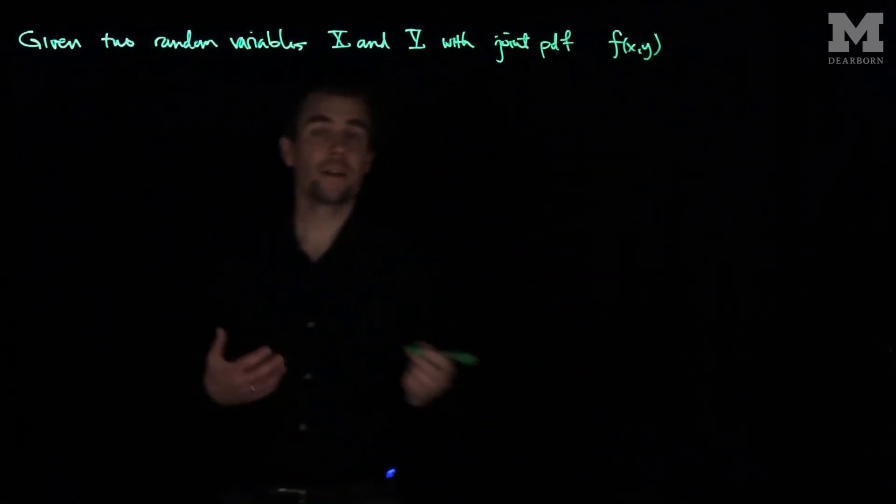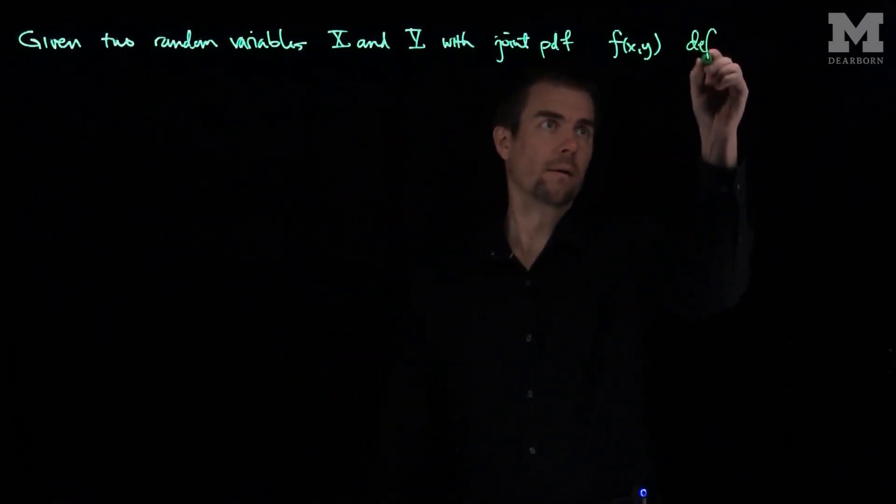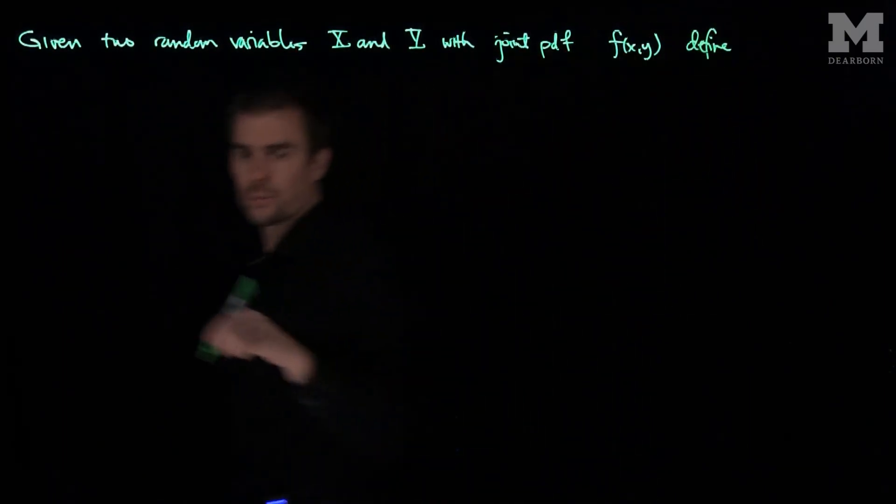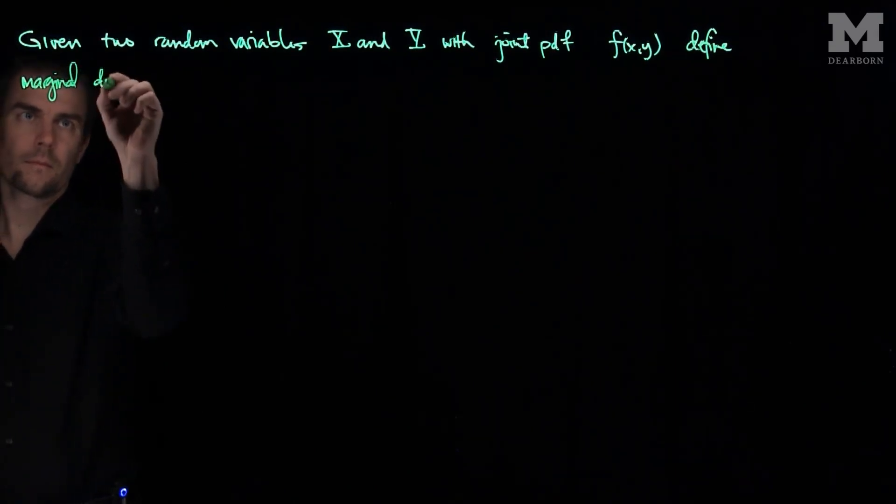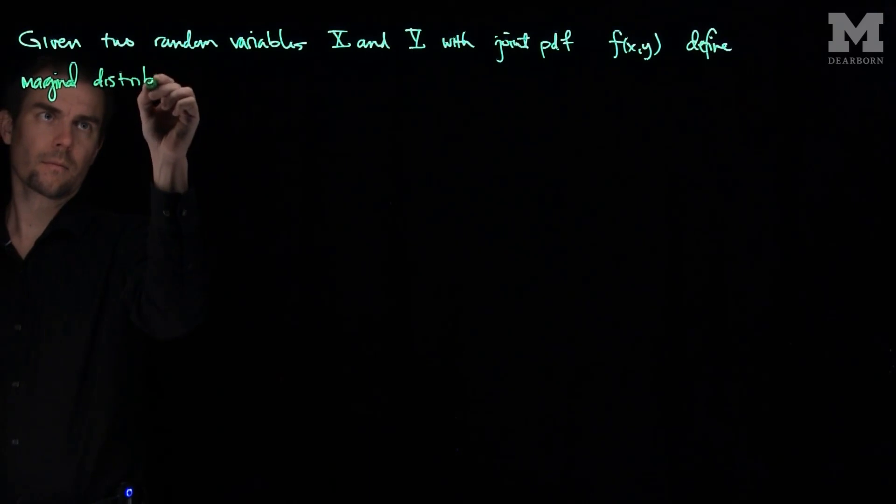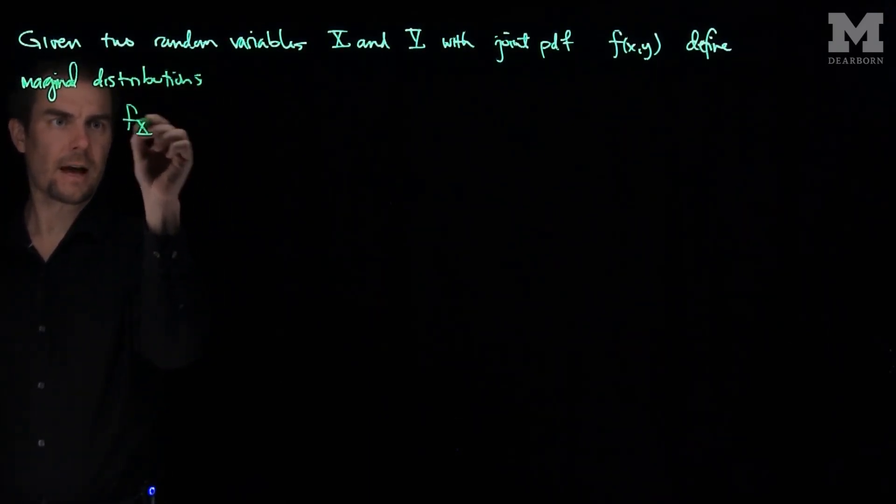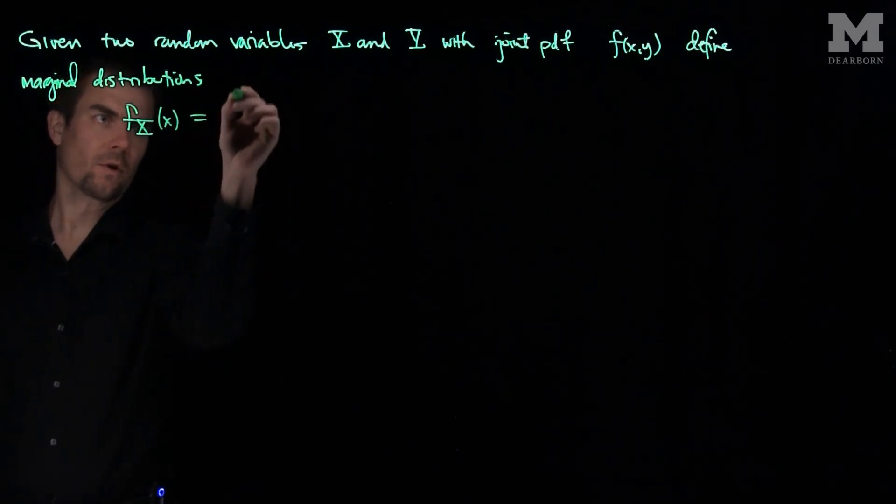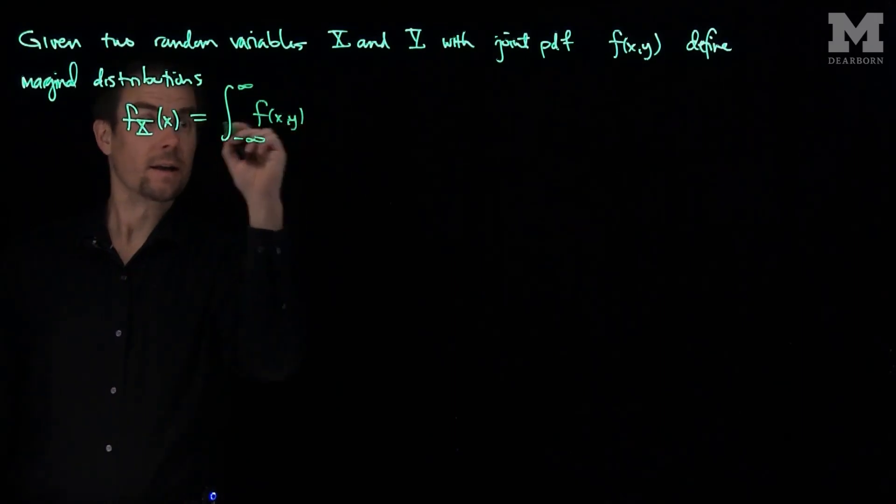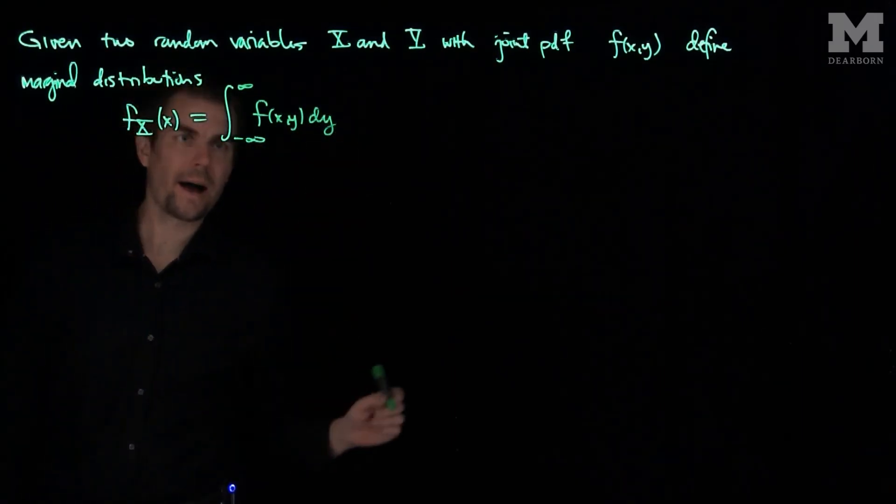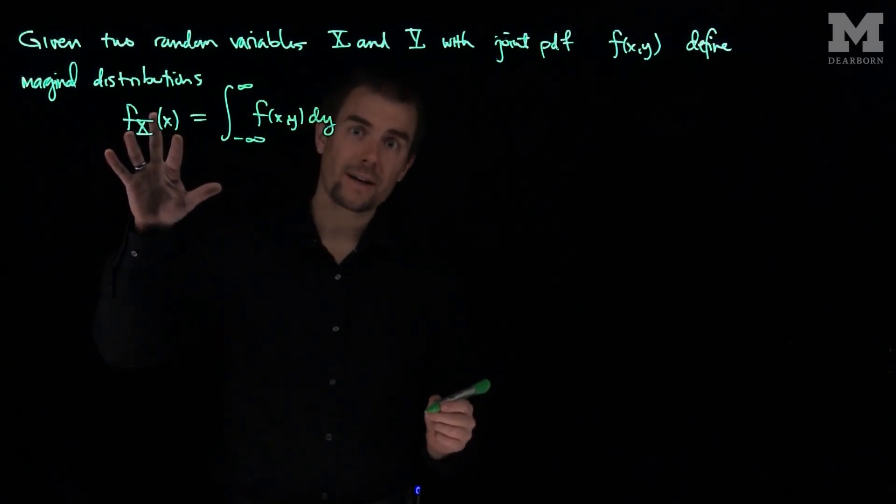We can define marginal distributions. f_x(x) is the integral from negative infinity to infinity of f(x,y) dy. So I'll integrate out the y in the joint pdf and be left with what's left over for the x random variable.